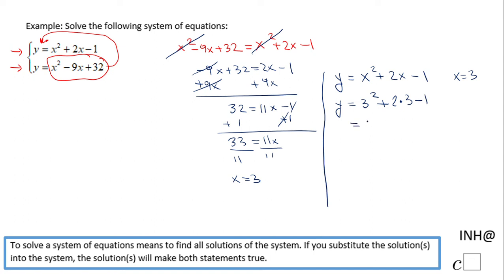And if we simplify this expression, we get 9 plus 6 minus 1, which is going to be 15 minus 1, which is 14. So the solution of this system of equations is x equals 3 and y equals 14, and you see here in the ordered pair format.